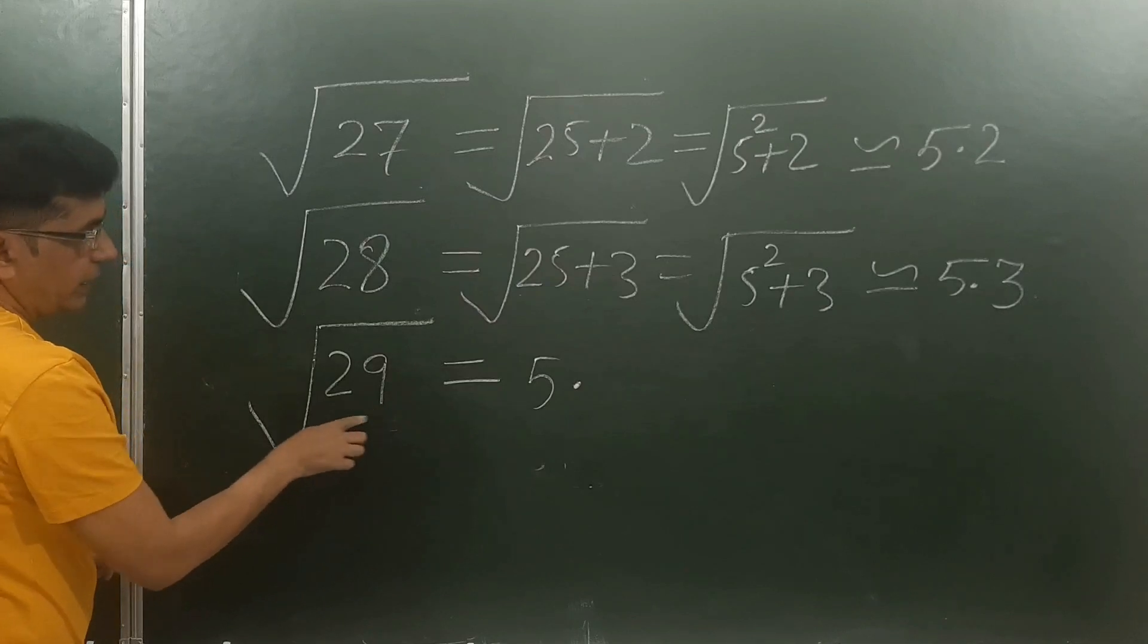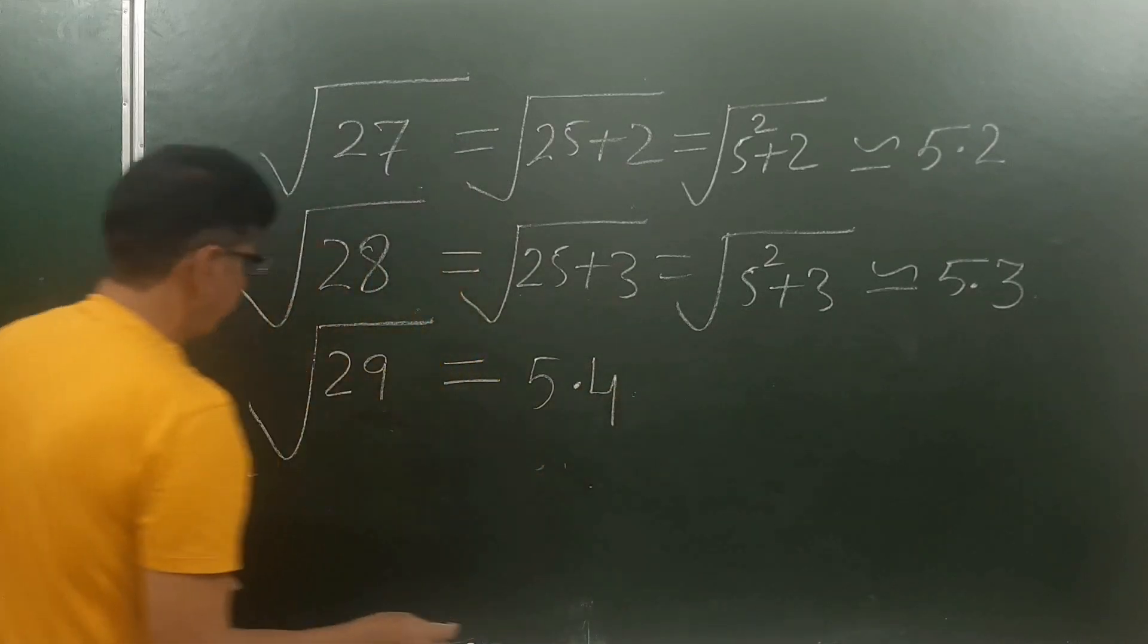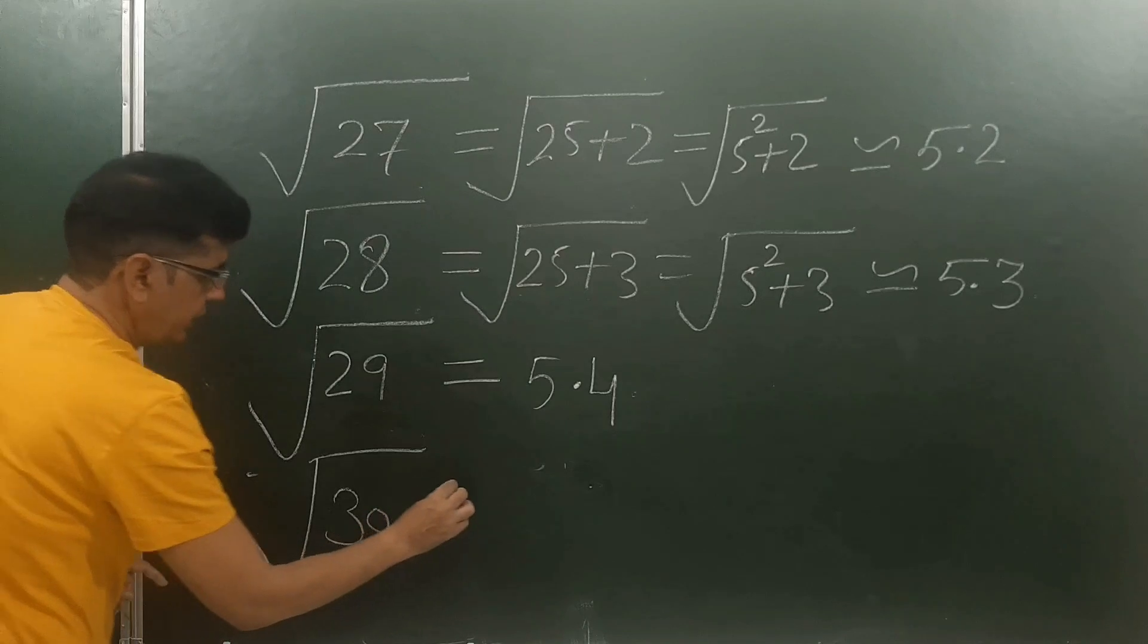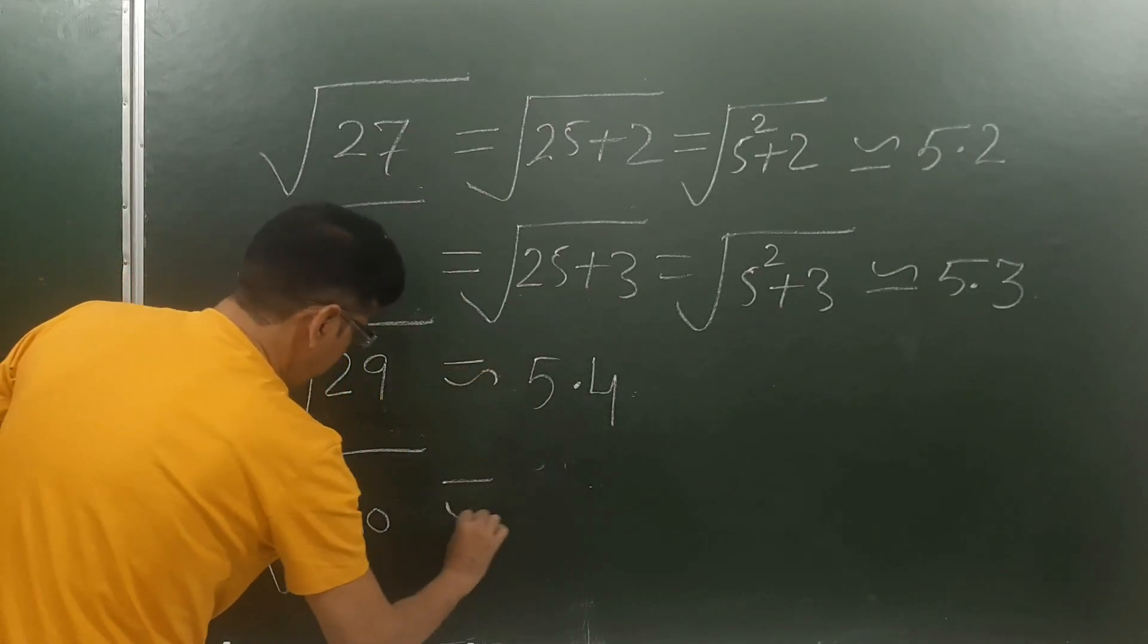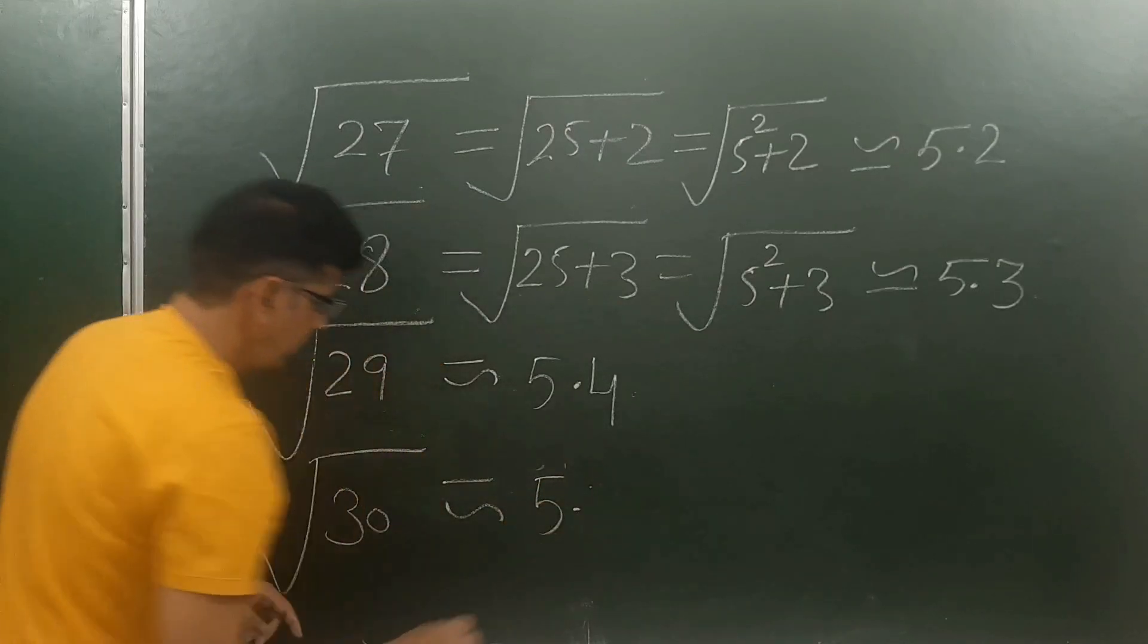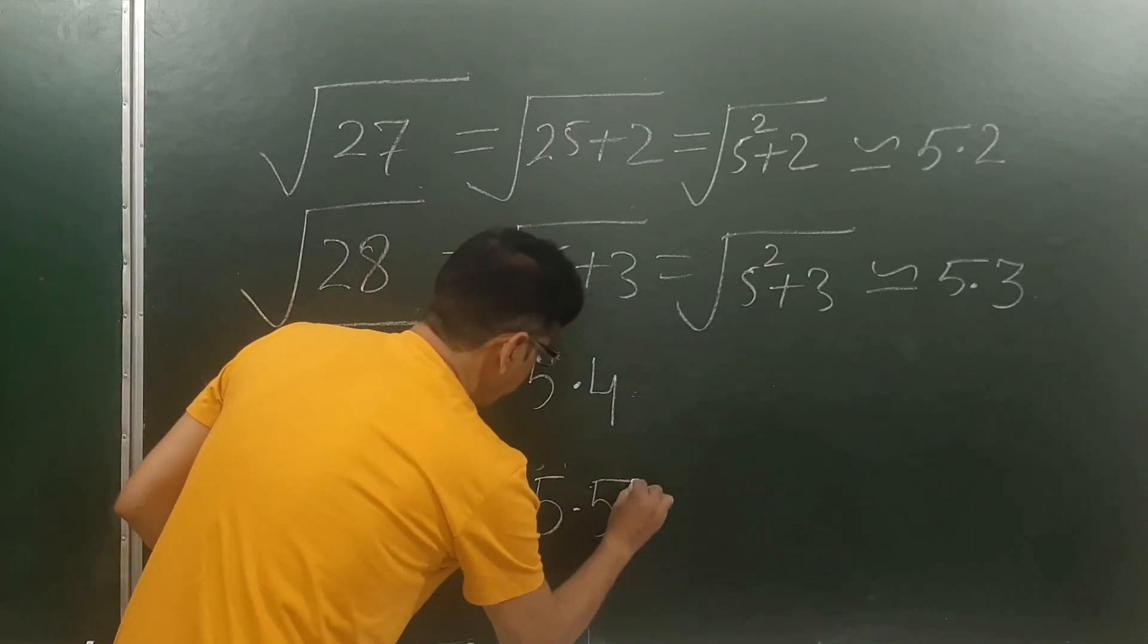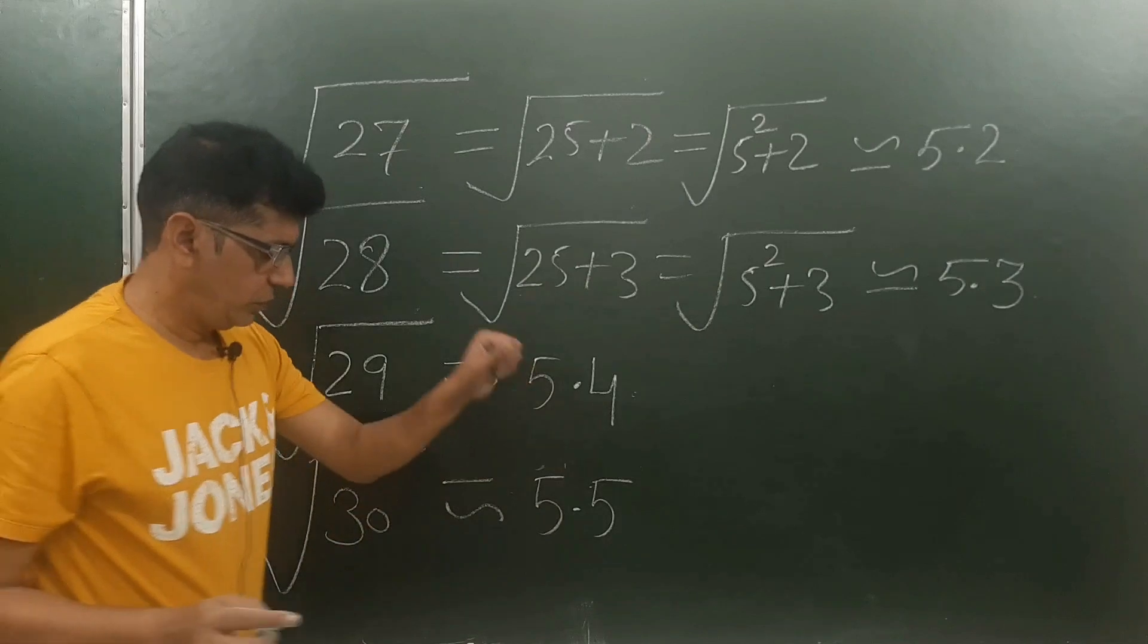Now you can write down without undergoing this process. Square root of 30: it is 5 and what is the difference between 25 and 30? That is 5, so the approximate square root of 30 is 5.5.